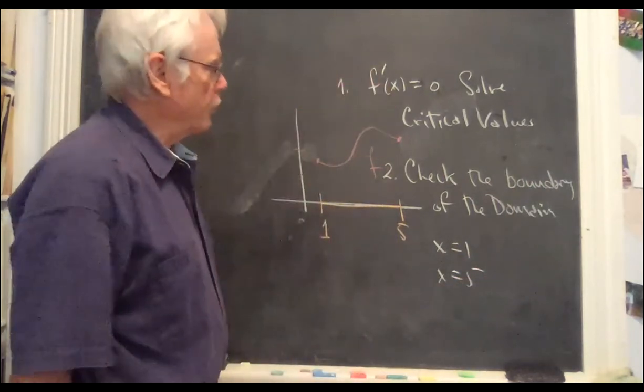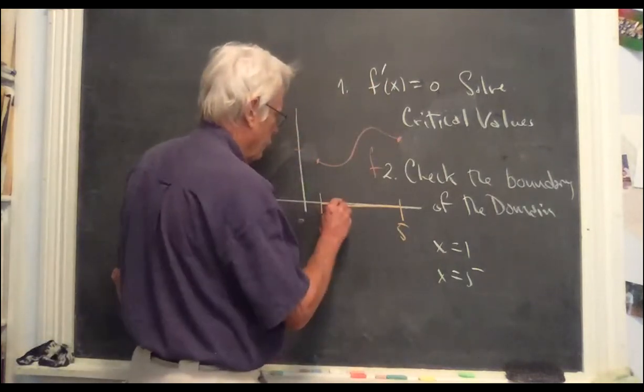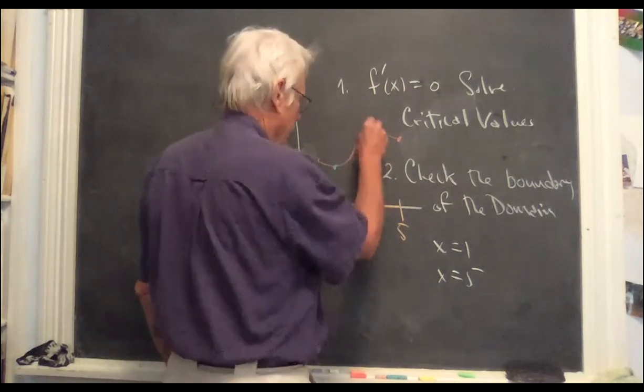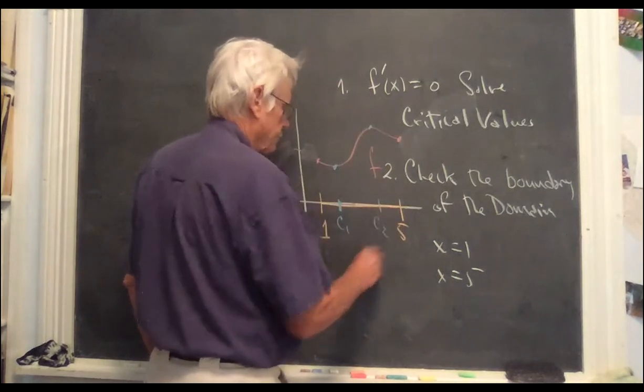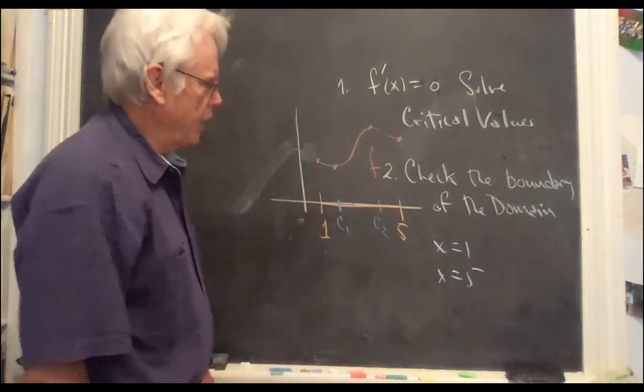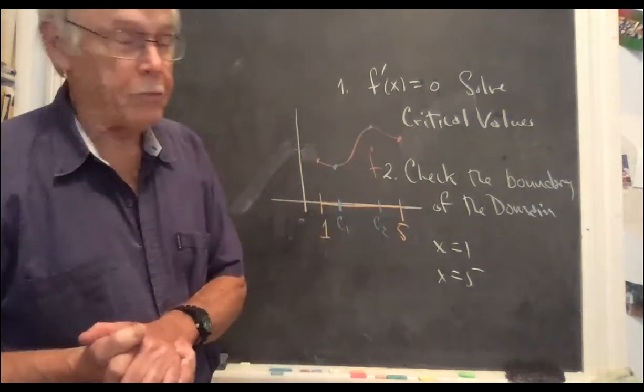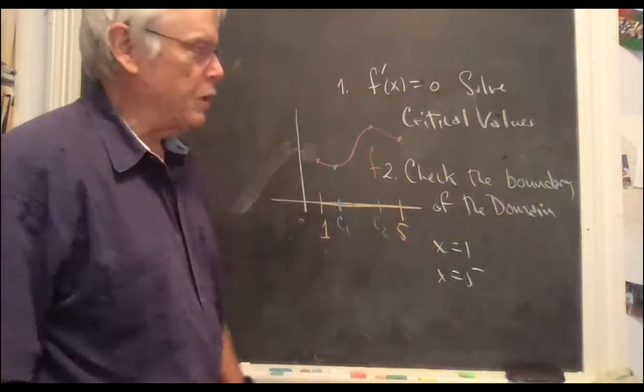You have a finite number of critical values. So the critical value would be here because the derivative is zero here, derivative is zero here. So you have two critical values. You check the boundary. And then whatever is the largest value is the maximum value. Where it occurs is where it occurs. And the same with minimum value.